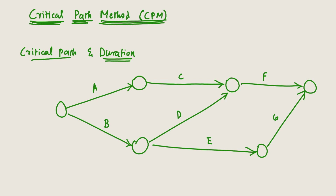These are all the activities present in the project, and every activity has a duration. For example: A is 5 days, B is 3 days, C is 5 days, D is 6 days, E is 10 days, F is 7 days, and G is 5 days. Now we can find the different paths. The first path is A-C-F.